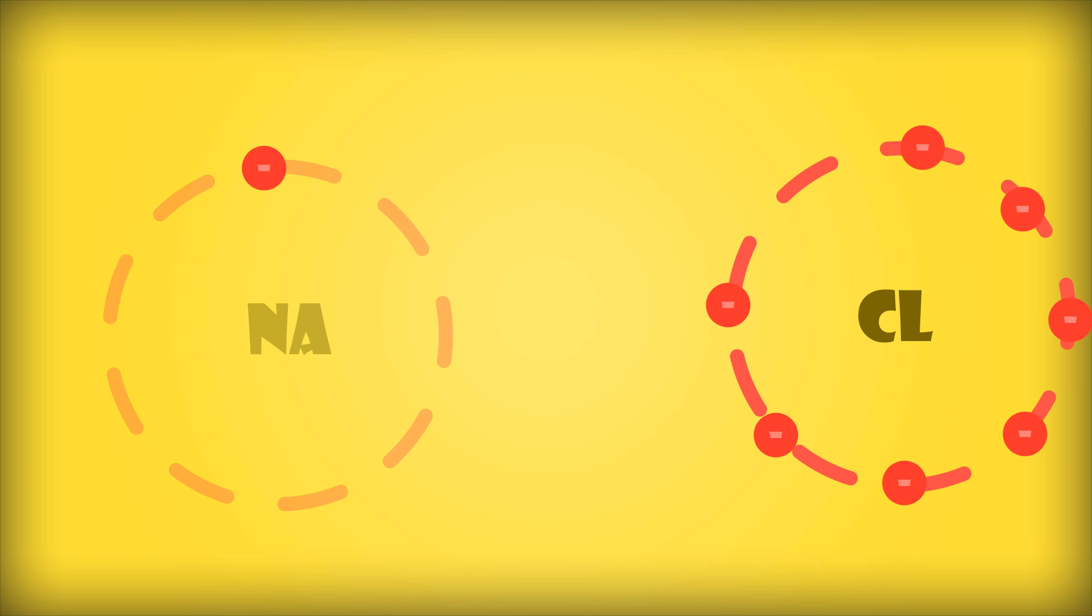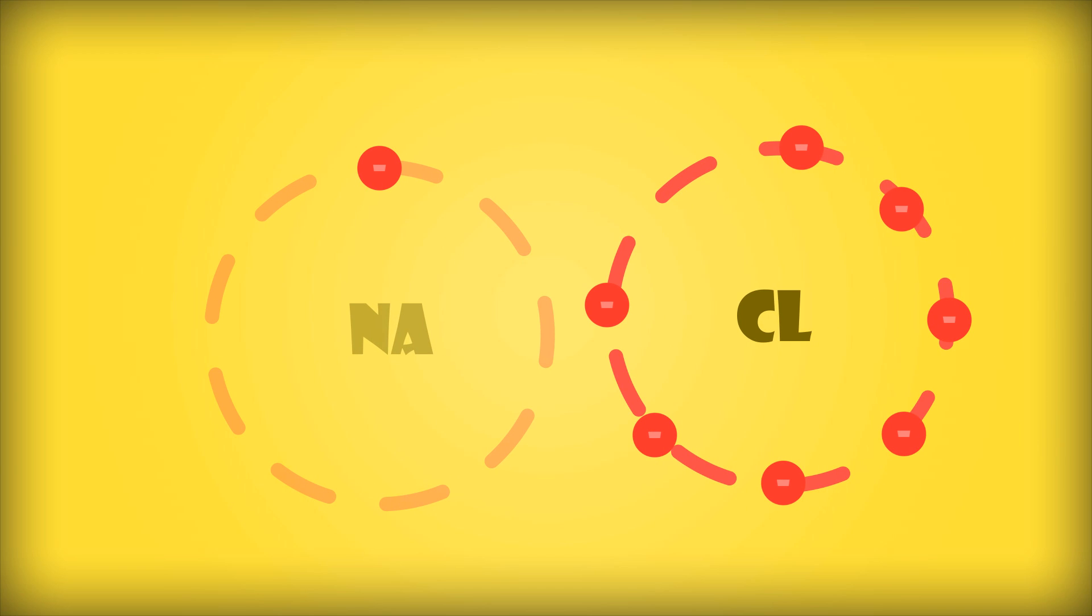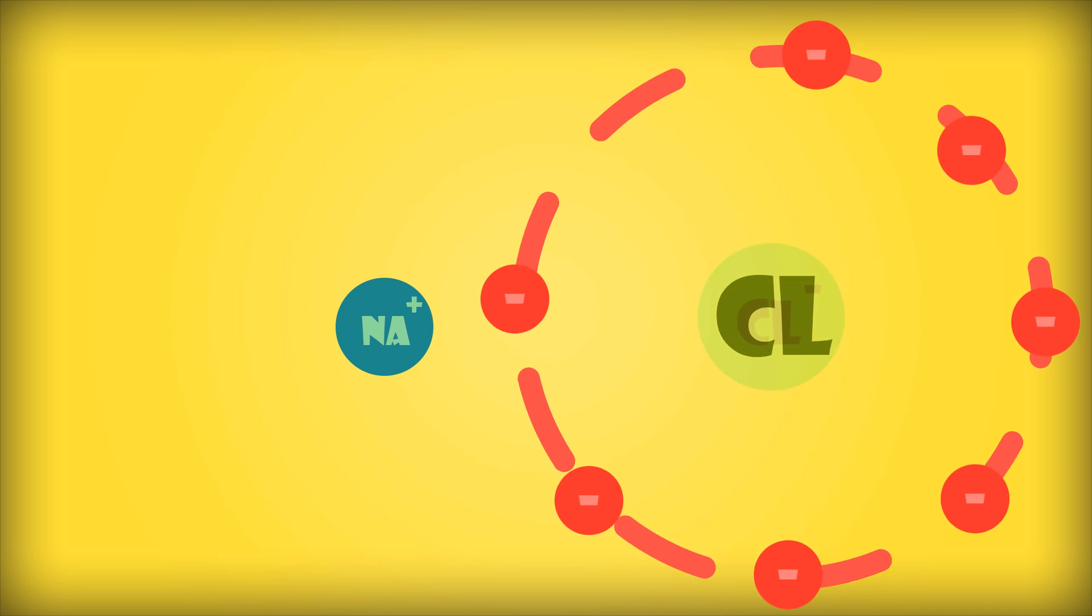Moving on to chlorine, which has an atomic number of 17, it has seven electrons in its outer shell, so it needs to gain one electron to have full outer shell configuration. Now when these atoms come near to each other, the electron leaves the sodium and joins the chlorine, and thus forms a positive sodium ion and a negative chlorine ion.